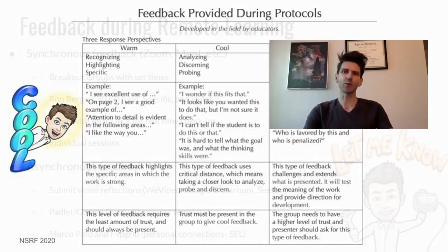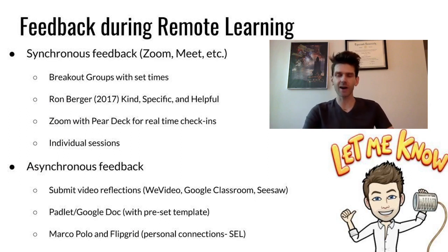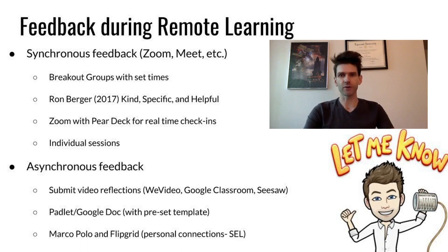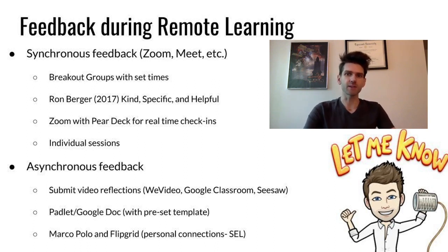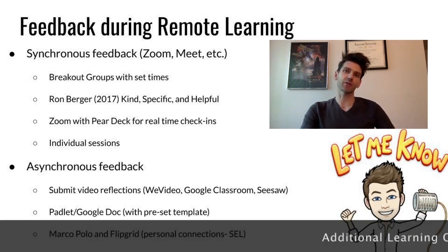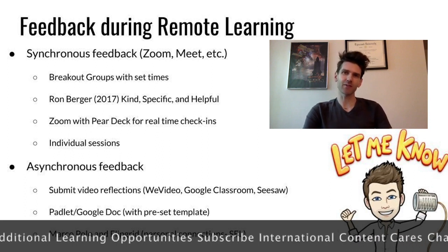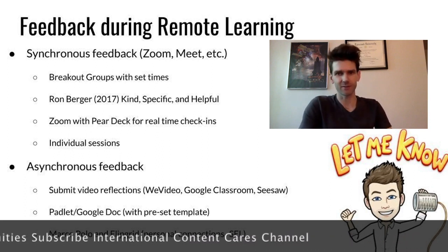As far as how you give feedback during remote learning, it's really important to consider synchronous and asynchronous feedback. For synchronous feedback, you can use tools like Google Meet or Zoom, and you can set up breakout rooms easily in Google Meet. I really like what Ron Berger suggests in the kinds of feedback we give — make sure it's kind, specific, and helpful. That frames the feedback so it's the most positive possible.